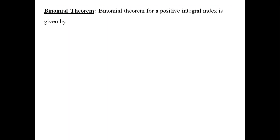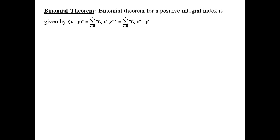Let us first look into the definition for binomial theorem. Binomial theorem for a positive integral index is given by: (x + y)^n = summation r=0 to n of nCr * x^r * y^(n-r). The same can also be written as summation r=0 to n of nCr * x^(n-r) * y^r, where x and y are real numbers.